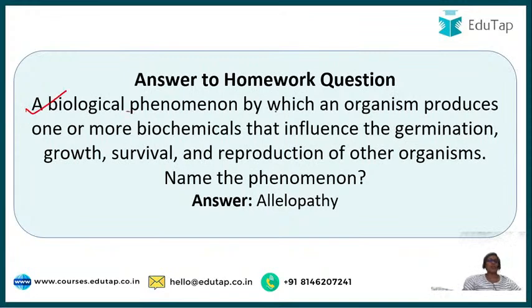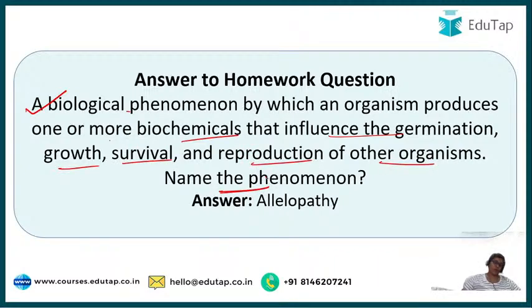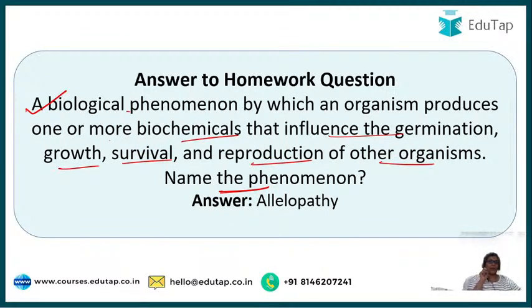Yesterday's homework answer: the biological phenomenon by which an organism produces one or more biochemicals that influence the germination, growth, survival and reproduction of other organisms is called allelopathy. Some plants produce chemicals that are not suitable for other plants — that is why farmers must be careful while going for intercropping. For example, sunflower has an allelopathic effect on groundnut, so they cannot be intercropped together.